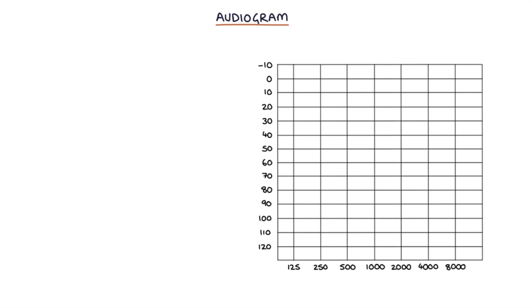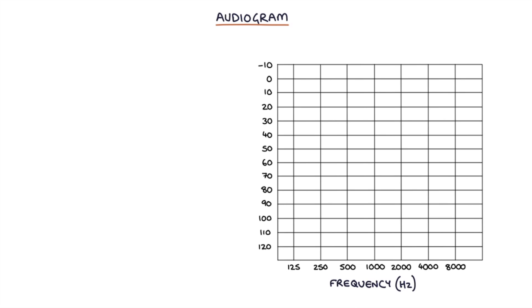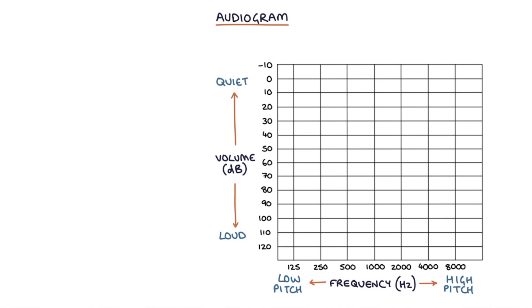Let's talk about audiograms. Audiograms are charts that document the volume at which patients can hear different tones. The tone is measured as frequency in hertz, which is plotted on the x-axis from low to high pitched. The volume is measured in decibels, which is plotted on the y-axis from loud at the bottom to quiet at the top. The lower down the chart, the higher the decibels and the louder the volume. The higher up the y-axis, the more sensitive the patient's hearing is.